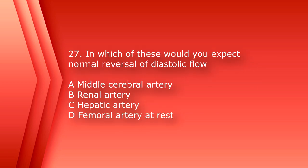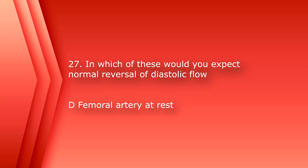Number 27: in which of these would you expect normal reversal of diastolic flow? A. Middle Cerebral Artery, B. Renal Artery, C. Hepatic Artery, or D. Femoral Artery at Rest. The answer is D, Femoral Artery at Rest. A through C are usually low-resistance monophasic waveforms.